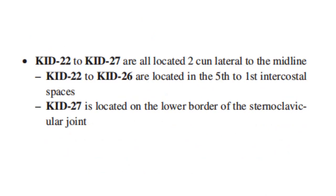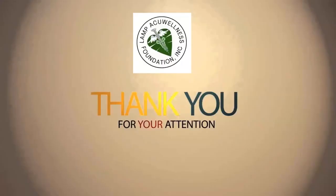Kidney 22 to Kidney 27 are all located two cun lateral to the midline. Kidney 22 to 26 are located in the fifth to the first intercostal spaces. Kidney 27 is located on the lower border of the sternoclavicular joint.